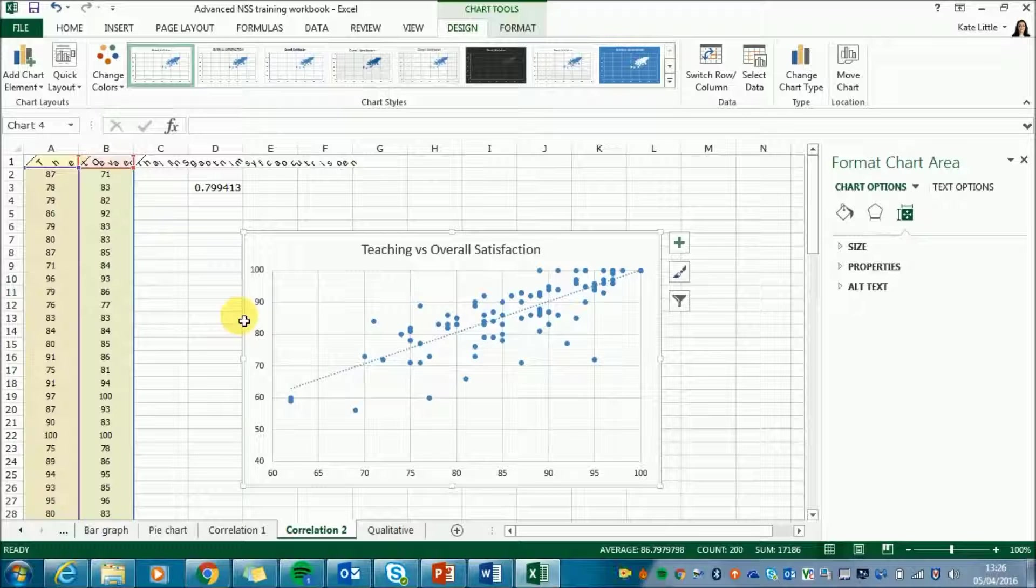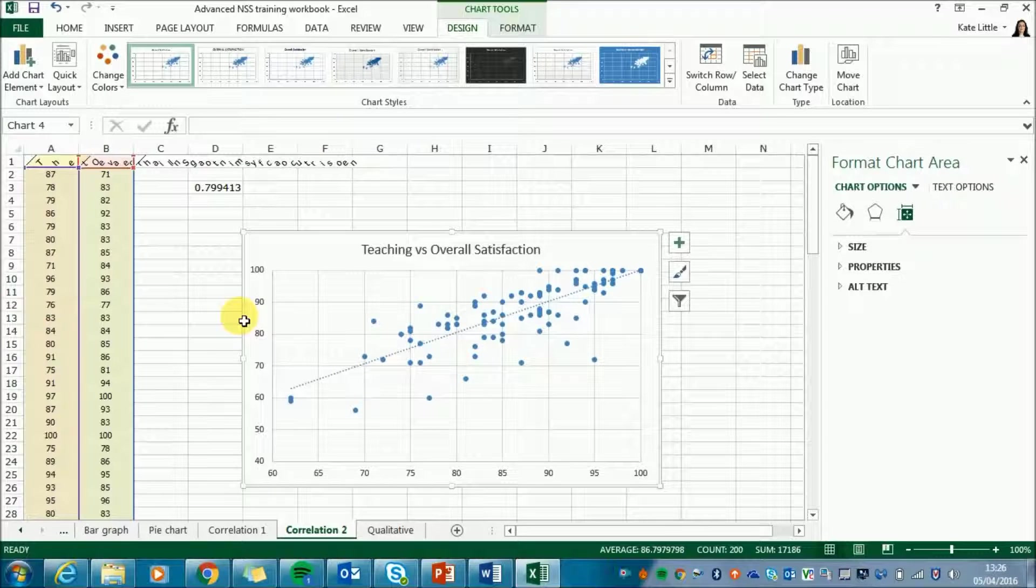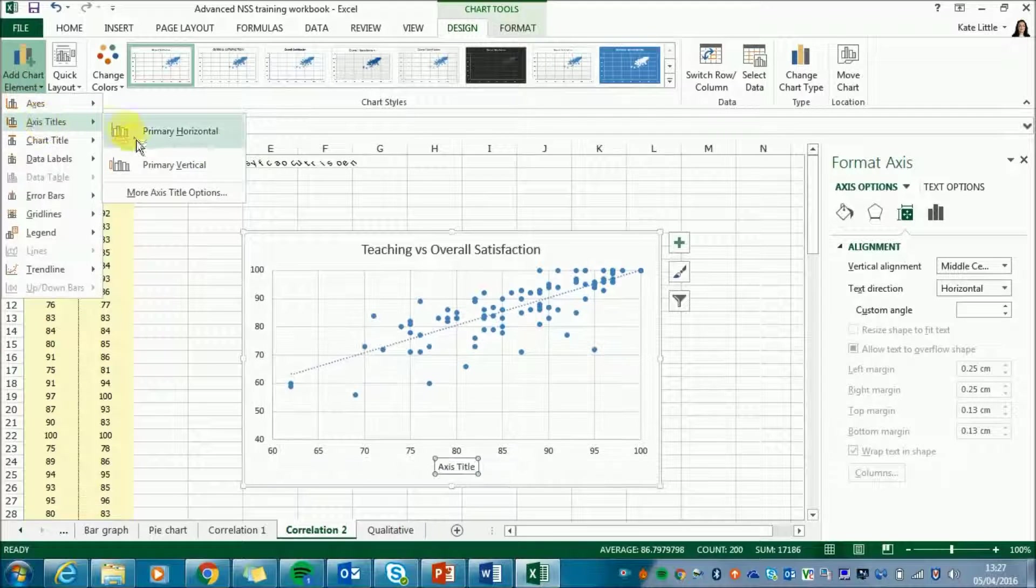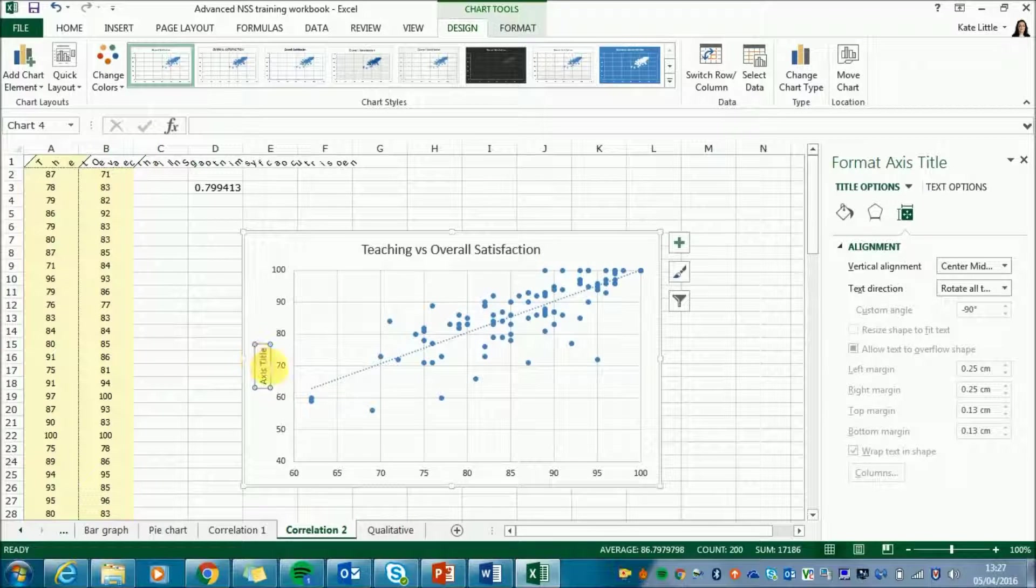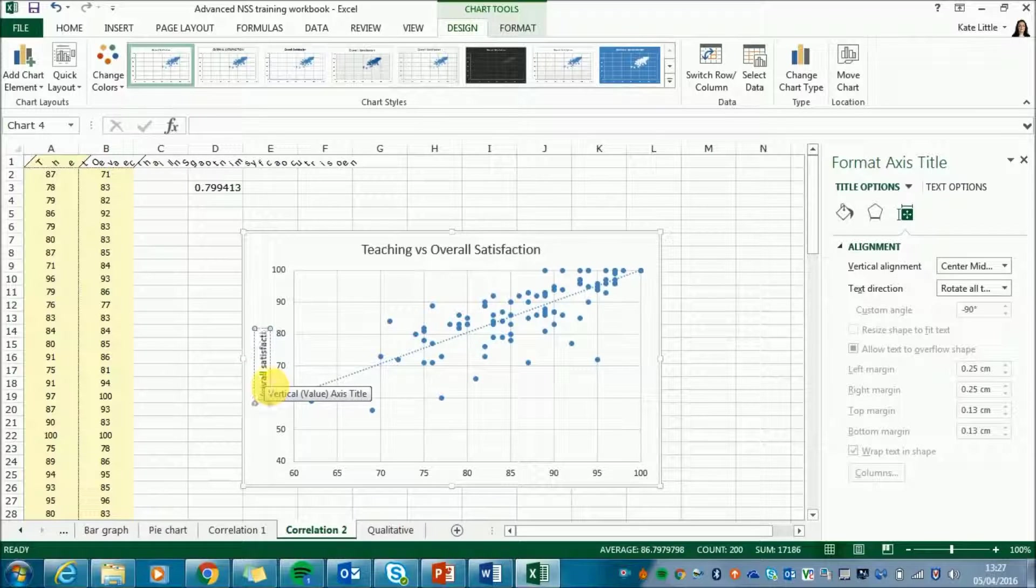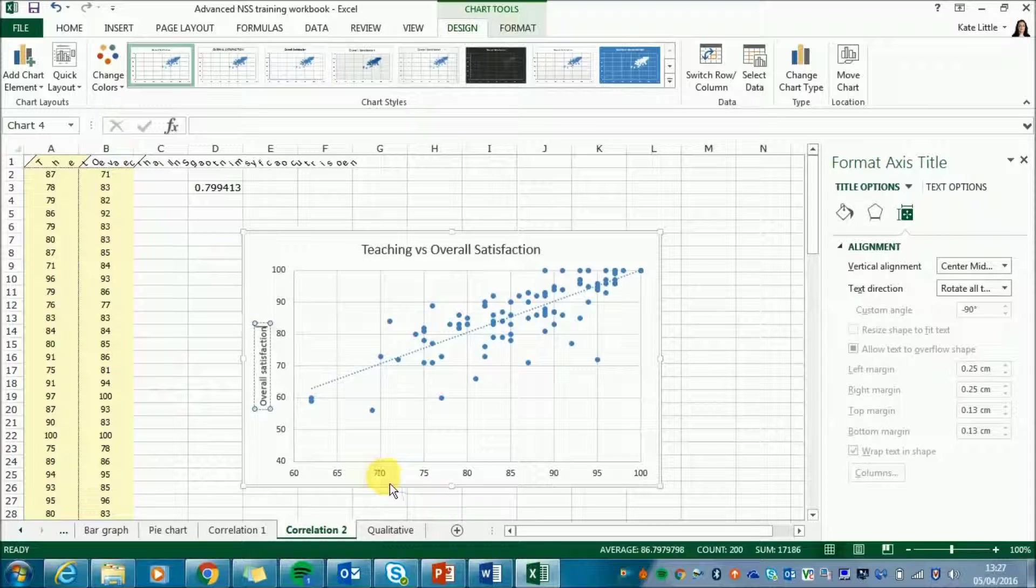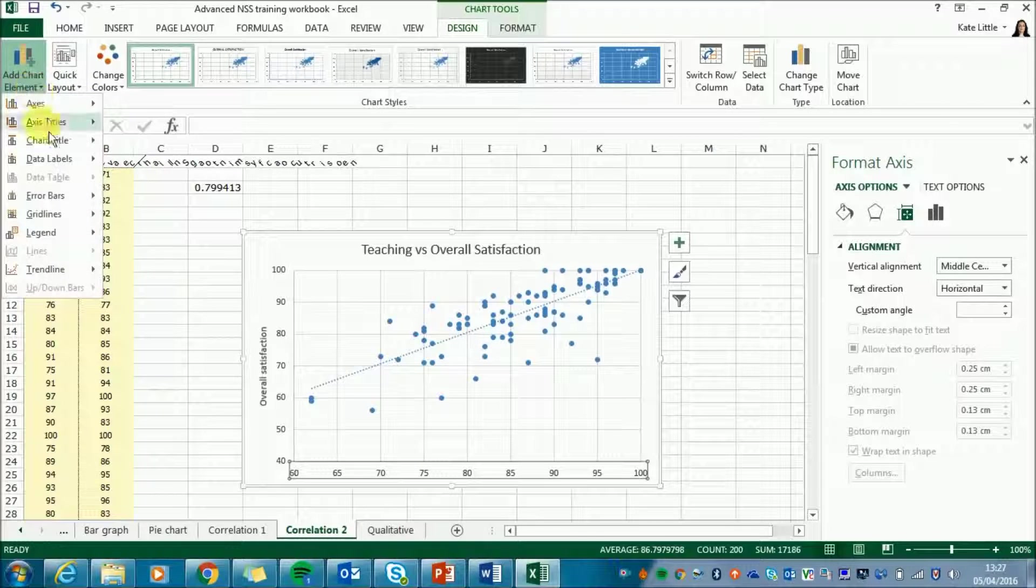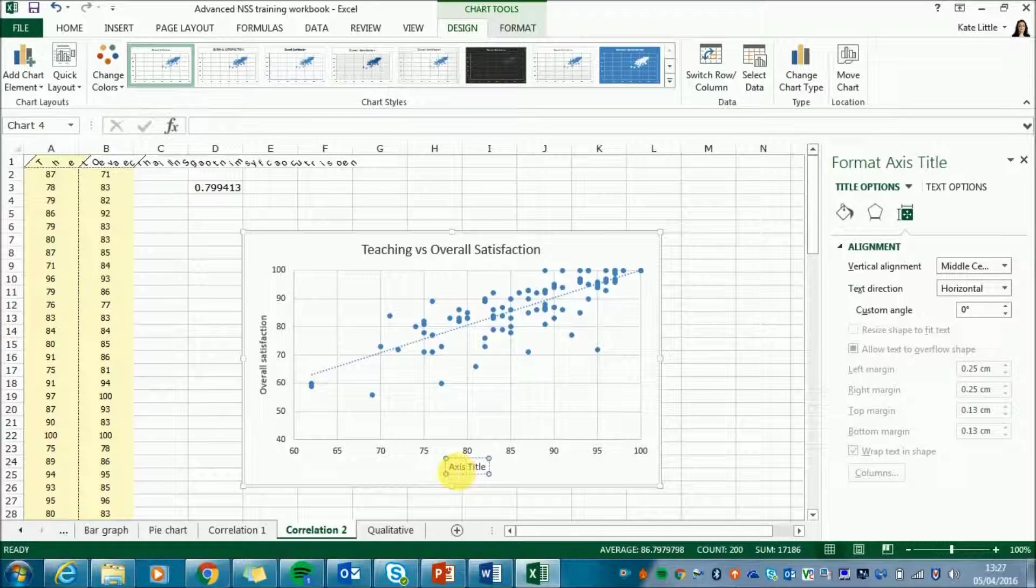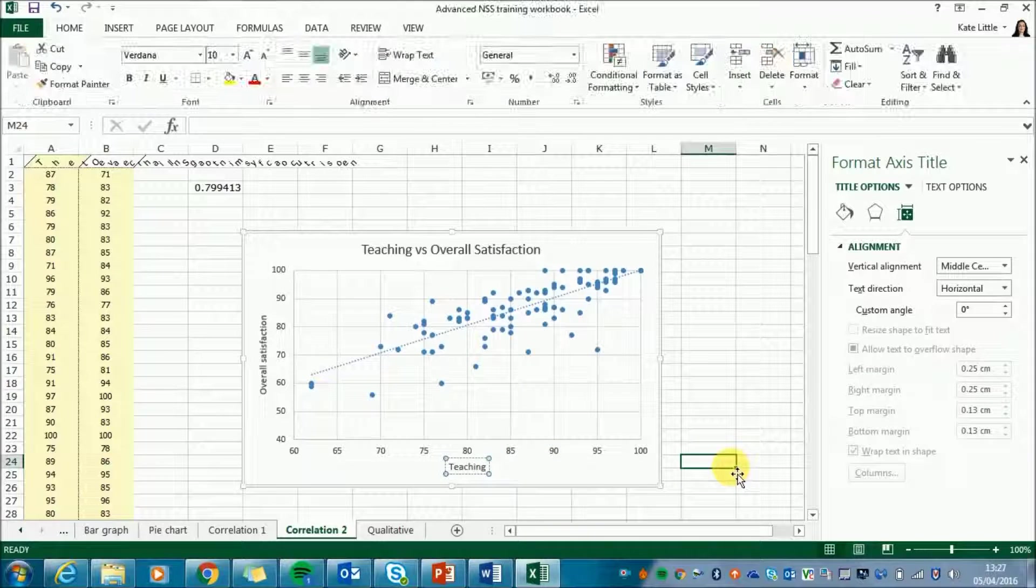The final thing I'm going to do is I'm going to label my axes so I know which one's which. So I know that the y-axis is overall satisfaction. So I'm again going to go up to add chart element axis titles primary vertical and change that to overall satisfaction. And do the same for the x-axis. So add chart element axis titles primary horizontal and that is teaching.